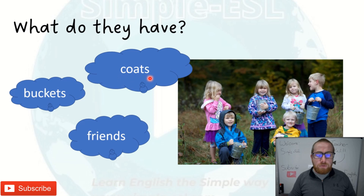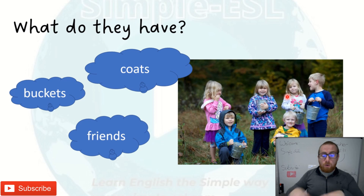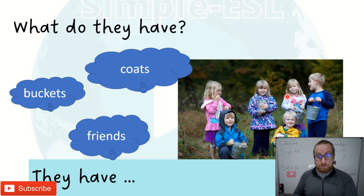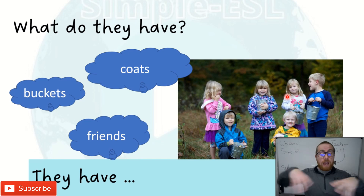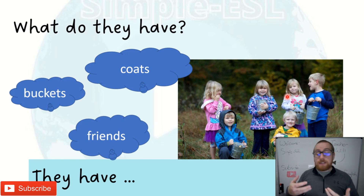Now, what do they have? They have coats — to keep yourself warm. They have buckets. And they are all friends — they have friends. So 'it has', 'she has', and 'they' — much like 'I', 'we', or 'you' — 'have' coats, buckets, and friends. You can practice this on the worksheet and form your own statements.